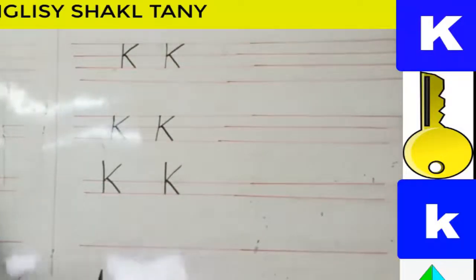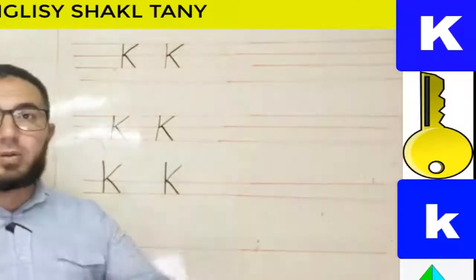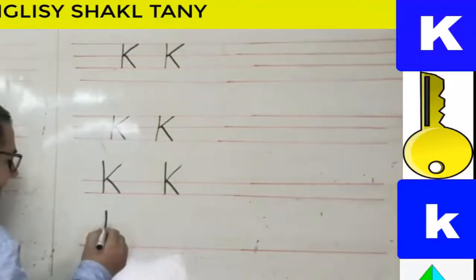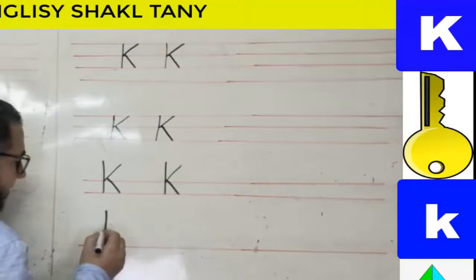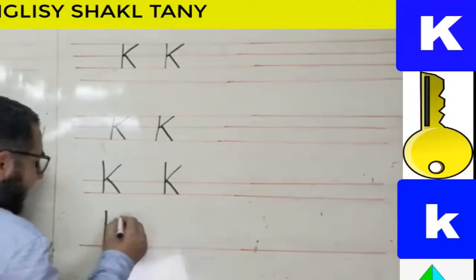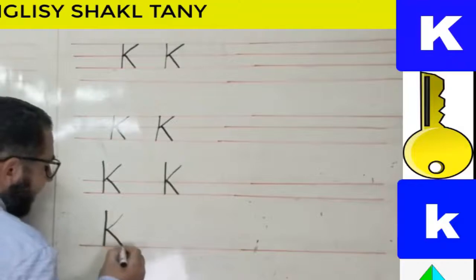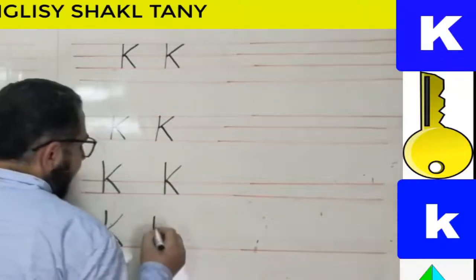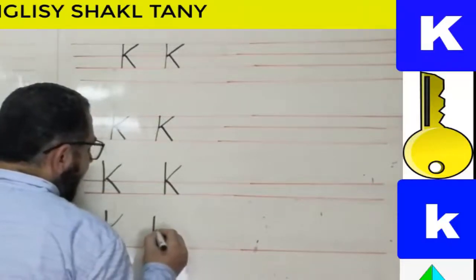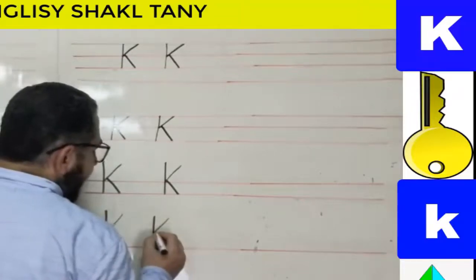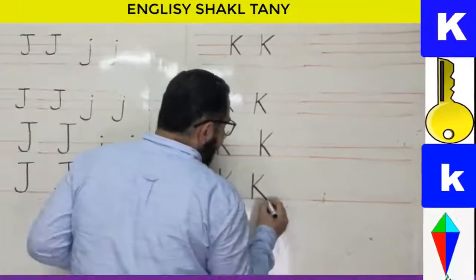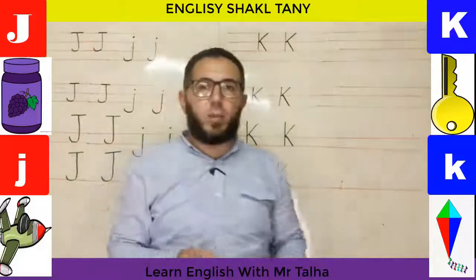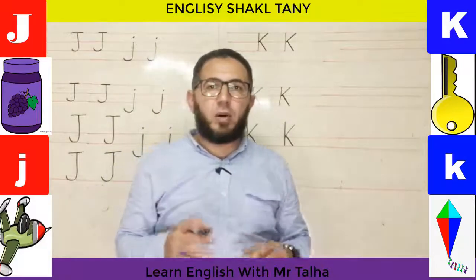When writing uppercase K on one line, all capital letters sit on the line. I start at the top, go down to the line, then from the middle go up with a diagonal and then go down with another diagonal line. That's K capital.